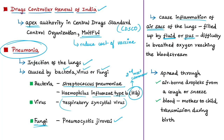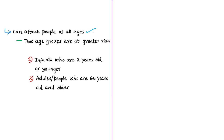Pneumonia is often spread through airborne droplets from a cough or sneeze, and mother-to-child transmission through the blood is also possible during birth. Pneumonia can affect people of all ages, but two groups are at greater risk: infants aged two years or younger, whose immune systems are still developing, and people aged 65 or older, whose immune systems begin to change as a normal part of aging.